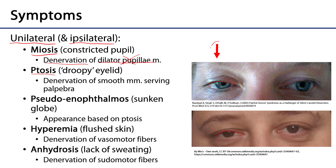This arrow is indicating the side with some presentation of Horner's. Related to that, classically we would hear the symptom enophthalmos, meaning a sunken globe, but this is actually pseudo-enophthalmos. As the eyelids become droopy with ptosis, this leads to the appearance of the globe of the eye being somewhat sunken — it's not actually sunken, but it seems to be.